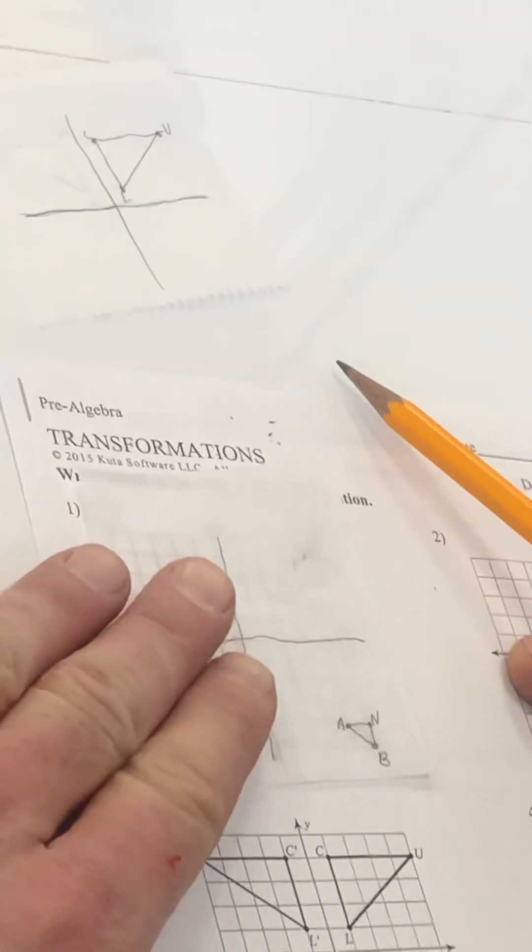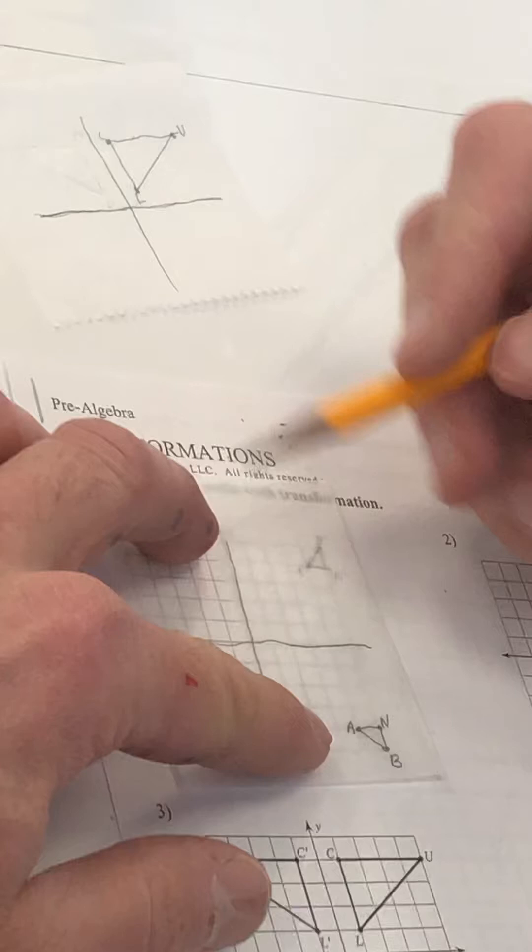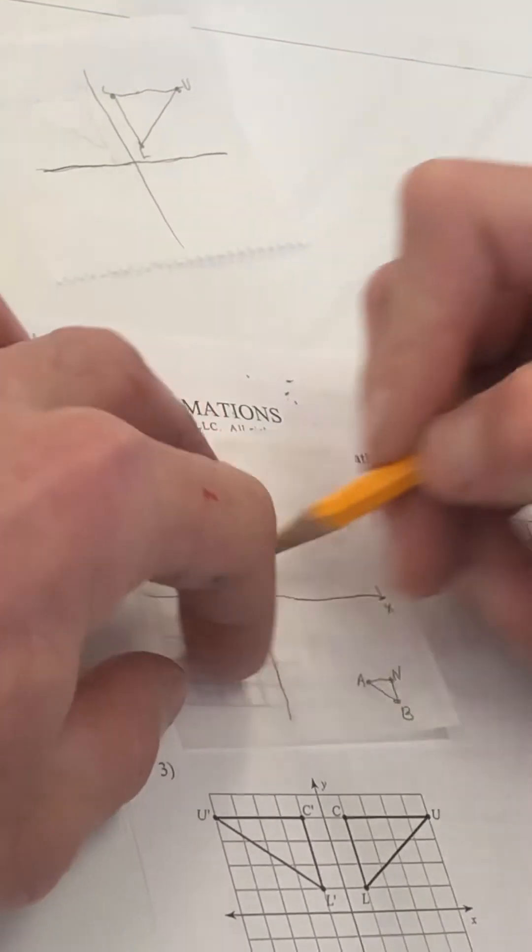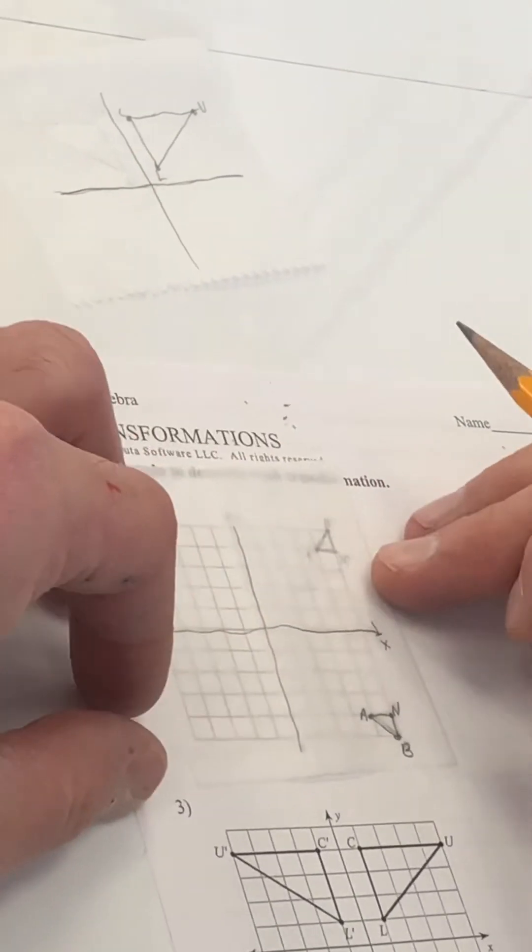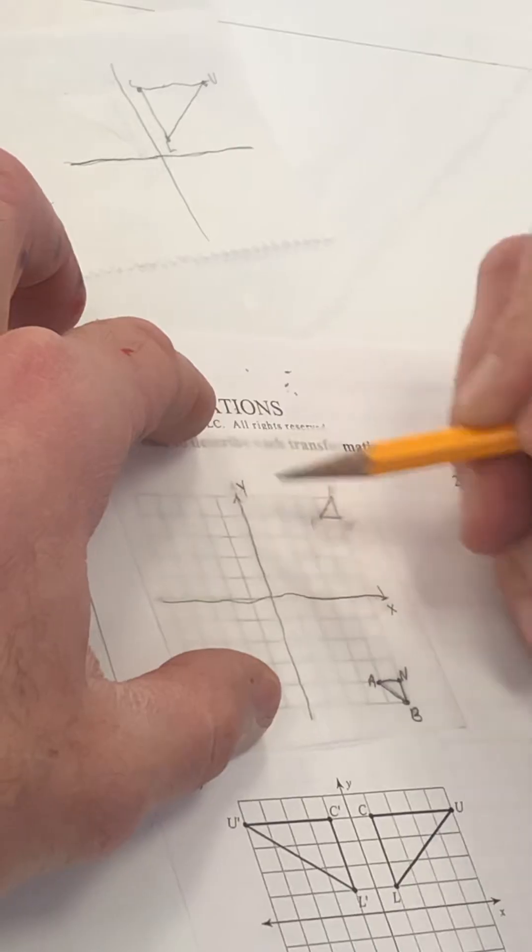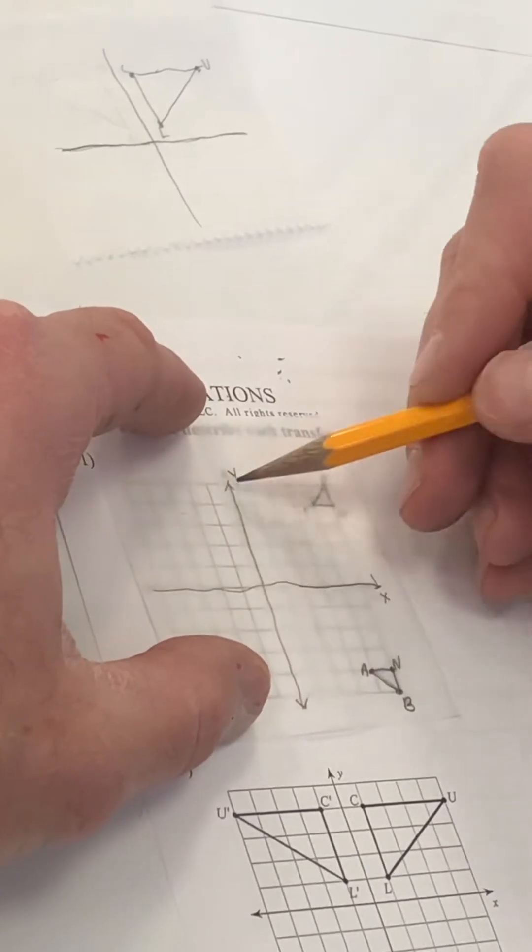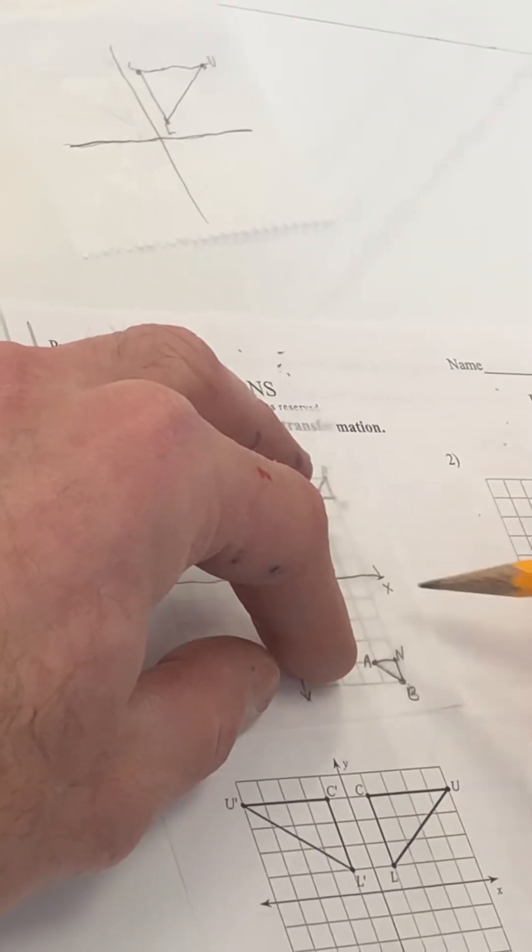So what you do is you draw, you trace the problem. So you're going to trace the x-axis right here and the y-axis right here. Okay, I've got the x-axis, the y-axis, and then I trace the shape. So A and B.